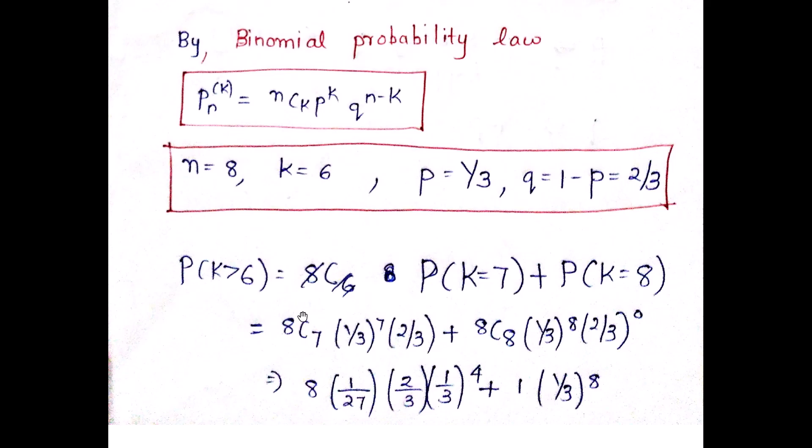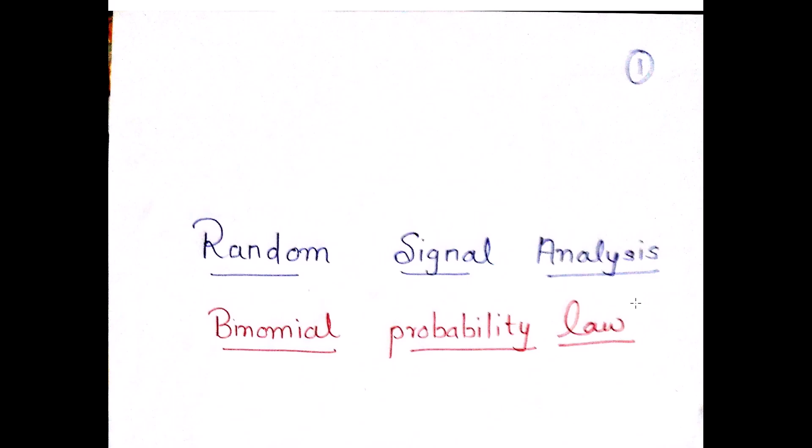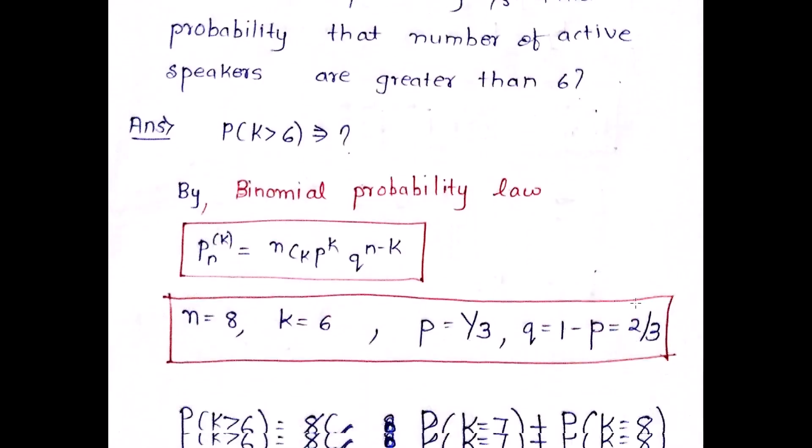So if it is greater than 6, it cannot be 6. It has to be greater than 6, so it is 7 and 8, because there are total 8 trials. And in such a way you can get the final answer. So I hope I am very clear with this. This is binomial probability law. Get a good understanding about it.